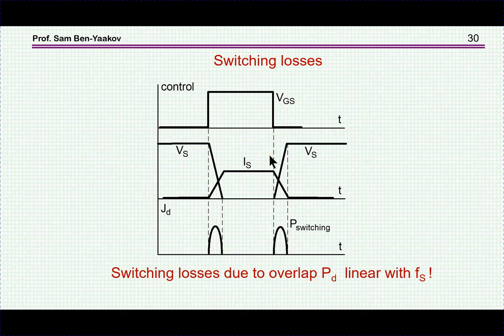Obviously, in order to get low switching losses, we want these transitions to be fast. New devices like gallium nitride or silicon carbide transistors have transitions in the nanosecond region, while in silicon MOSFETs it's within hundreds of nanoseconds.